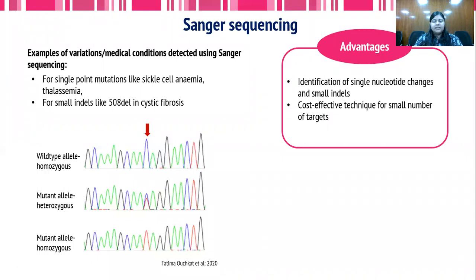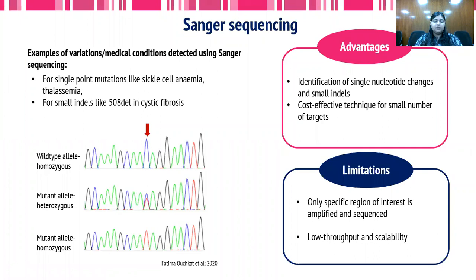The advantages of Sanger sequencing are that it is used for identification of single nucleotide changes at the DNA sequence level, moving from sub-microscopic level to DNA sequence level resolution. It is a very cost-effective technique for a small number of targets. However, only specific regions of interest can be amplified and sequenced, and Sanger is relatively low-throughput with limited scalability.